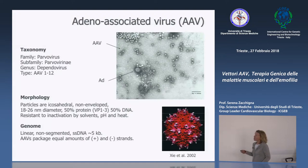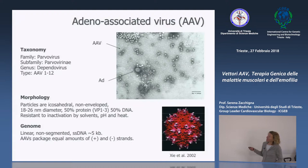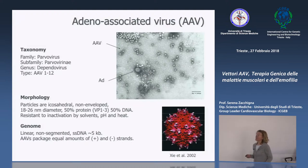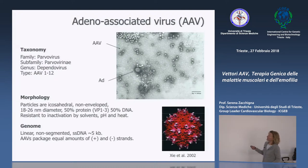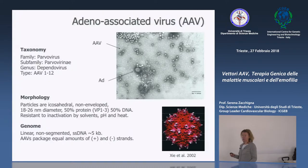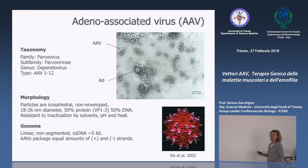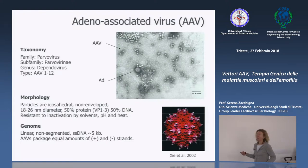AAV si associa ad adenovirus perché è un virus difettivo che fa parte del genere dei dependovirus, dipendendo dalla presenza di altri virus per espletare il proprio ciclo vitale. Non è un virus capace di infettare e replicarsi autonomamente, ma deve essere associato ad altri virus — da cui 'adeno' — ma non solo: anche herpes o altri tipi di virus.